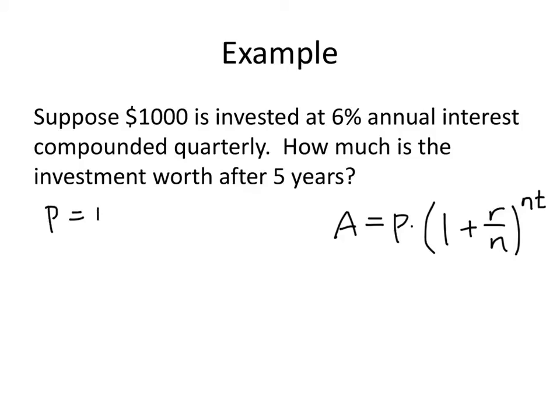Well, P is the initial investment of 1,000. r is the annual interest rate, which in this case is 6%, and remember we write that as a decimal, 0.06. n is the number of times per year we compound interest. And because we're told that we're compounding interest quarterly, n is going to equal 4.